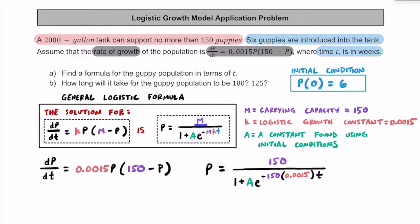If we go ahead and substitute 150 in for m, that goes in the numerator. We don't know the A value yet — we're going to use the initial conditions in a moment to find that. In the denominator's exponent, we have m times k. So we substitute m = 150 and k = 0.0015. Here p represents the population at a given time, and t represents the time measured in weeks.